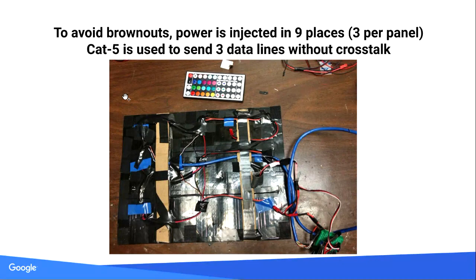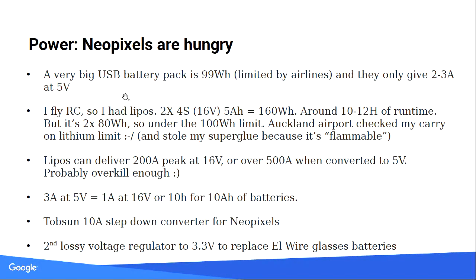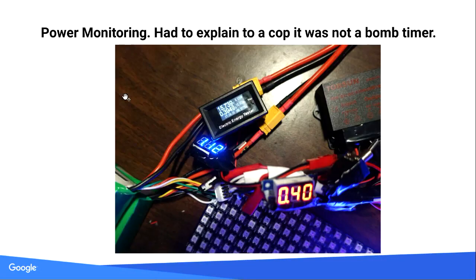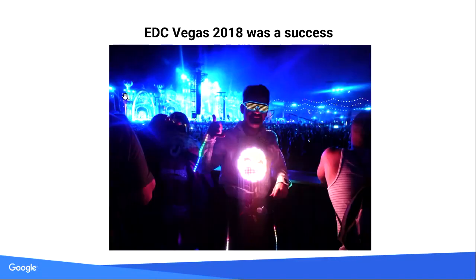That's what the panel looks like in the back. There are multiple power injection points because otherwise the trace on it is not big enough to pass all the power — you just re-inject power in multiple places. NeoPixels are hungry, but you don't have to run at full power. Those are running off USB — maybe two amp USB, so it's not terrible. In my fanny pack right now are 160 watt-hours worth of batteries, a 10 amp power converter, and different monitors showing how much power I'm using. That's the shirt you're looking at right now — worn at EDC, electronic dance carnival last year.